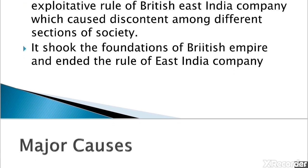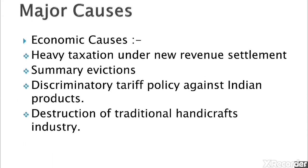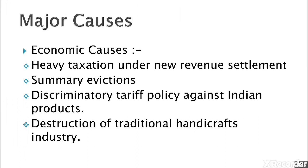The major causes of the revolt of 1857, like earlier uprisings, emerged from all aspects — socio, cultural, economic, and political — of the daily existence of the Indian population, cutting through all sections and classes. The first major cause is economic causes. There was very heavy taxation under the new revenue settlement.